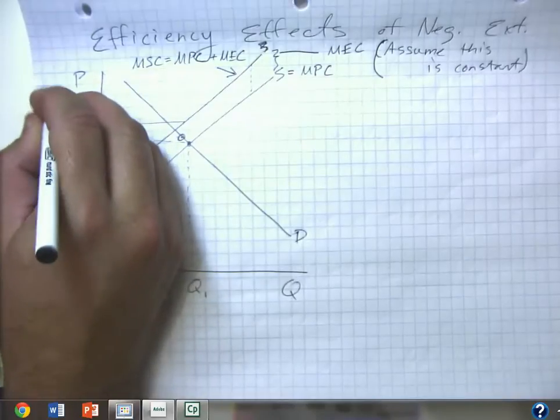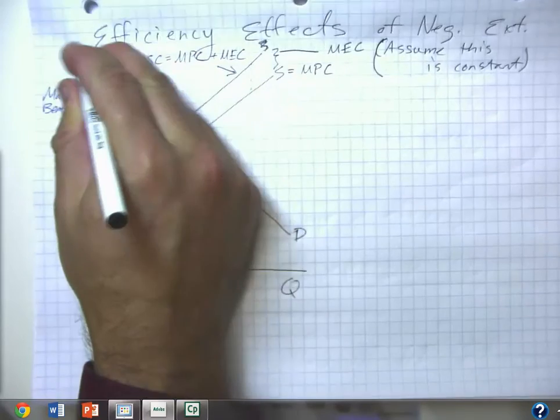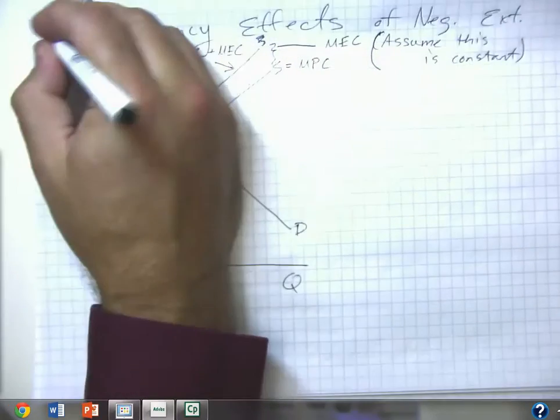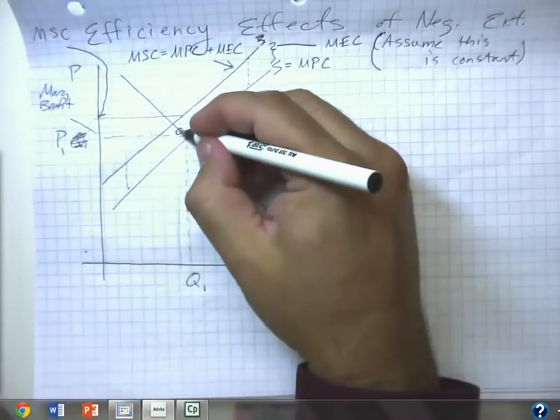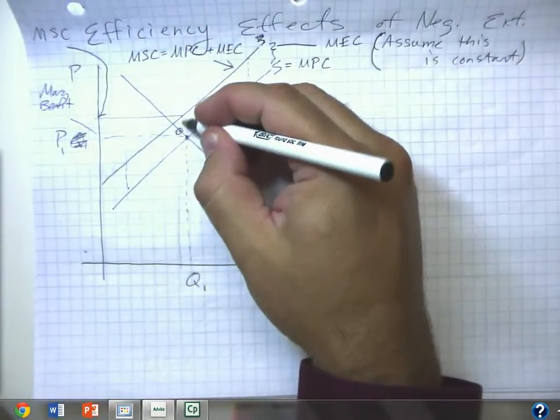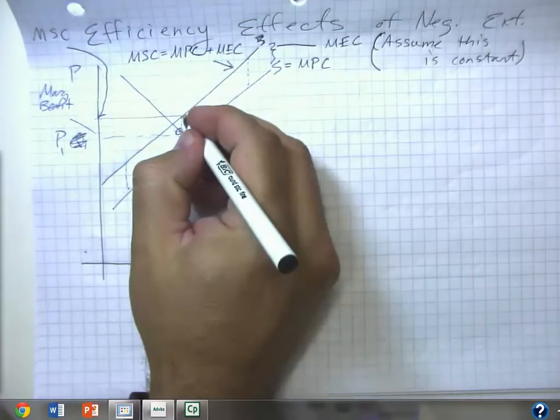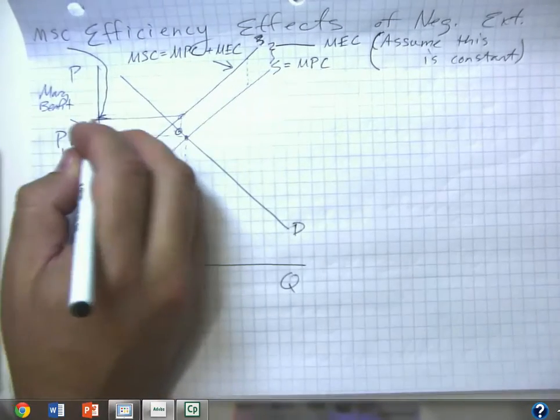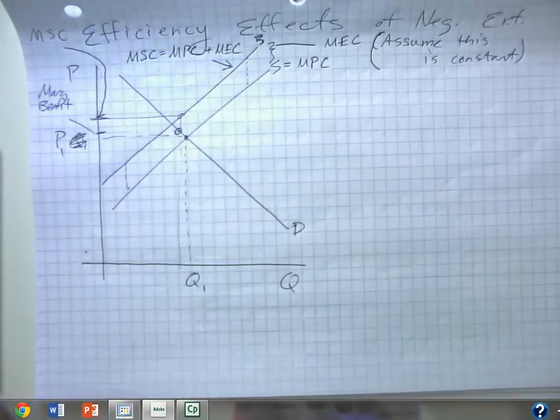It should have an E in it. And up here is going to be our marginal social cost. So producing this unit out here actually is a value-destroying situation because the total costs of production are up above the value that the consumer places on the good.